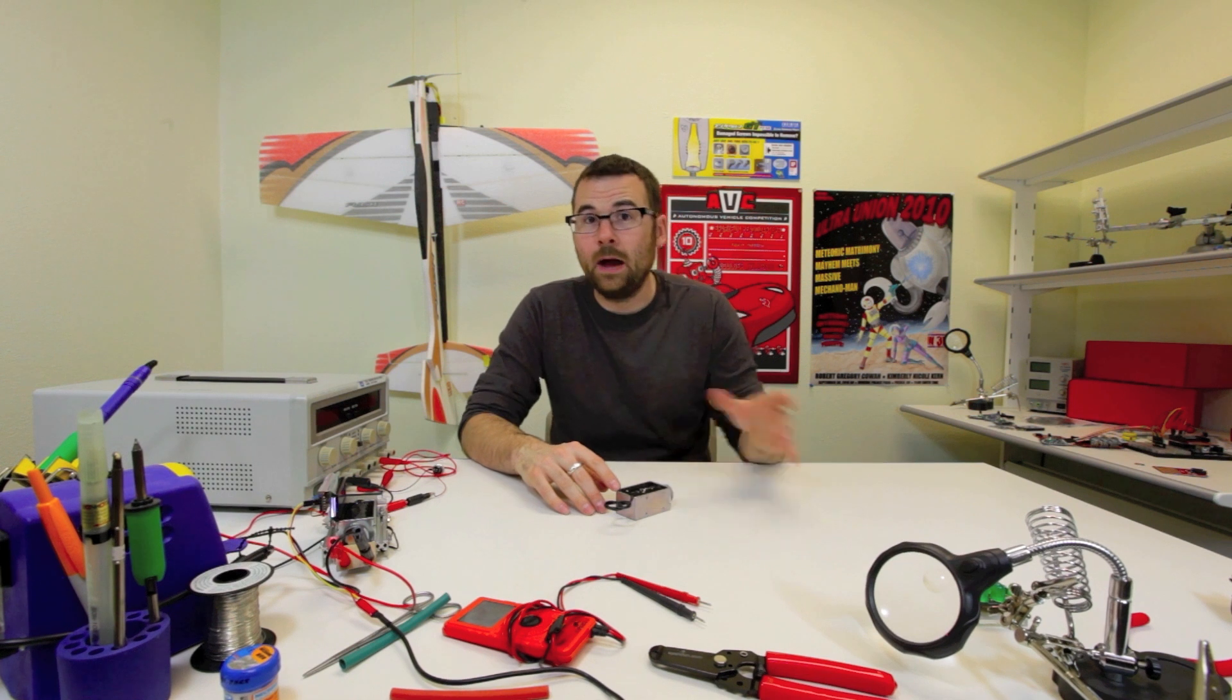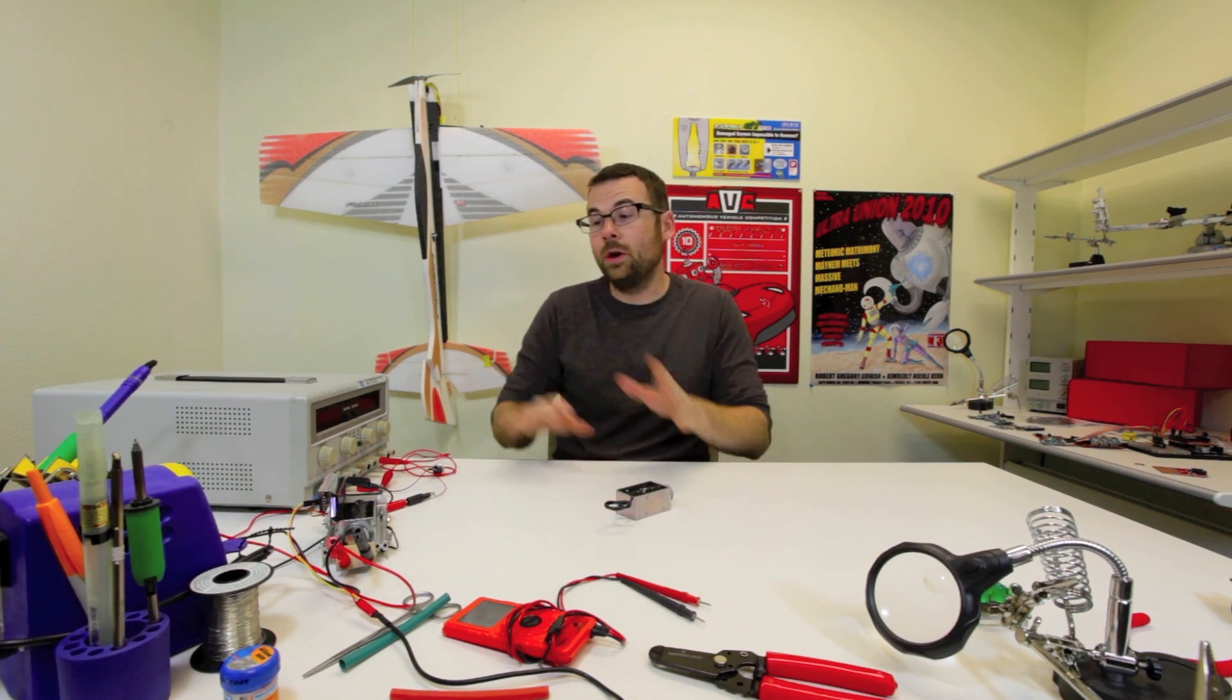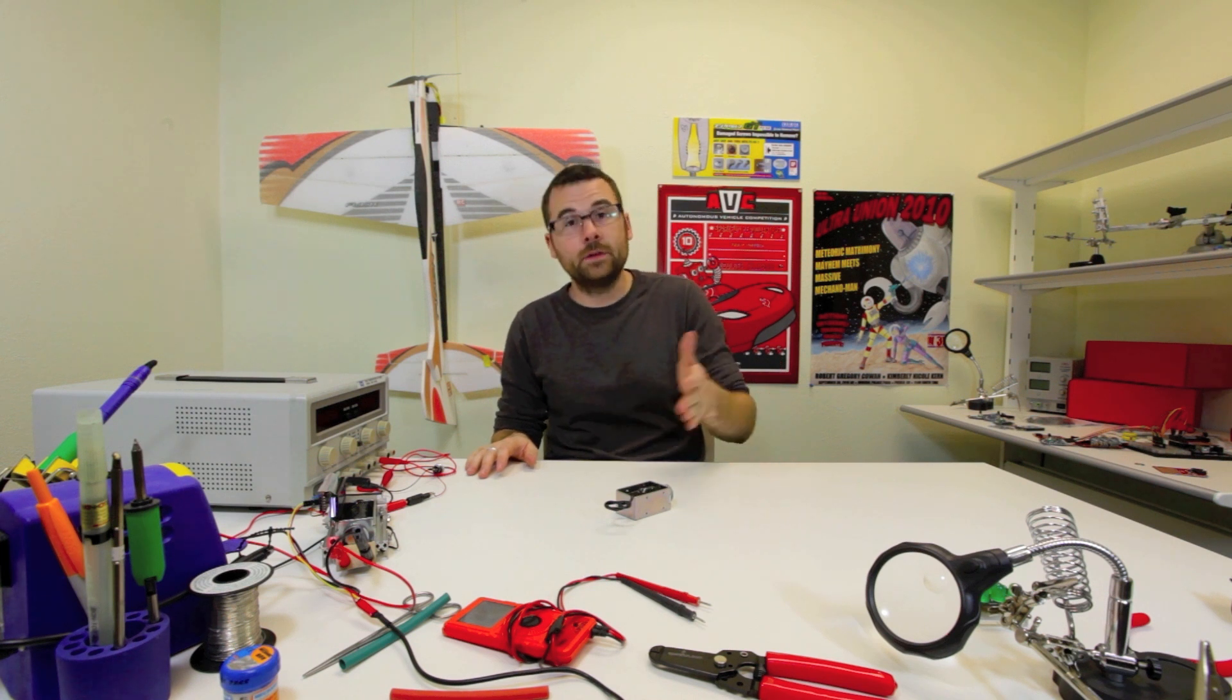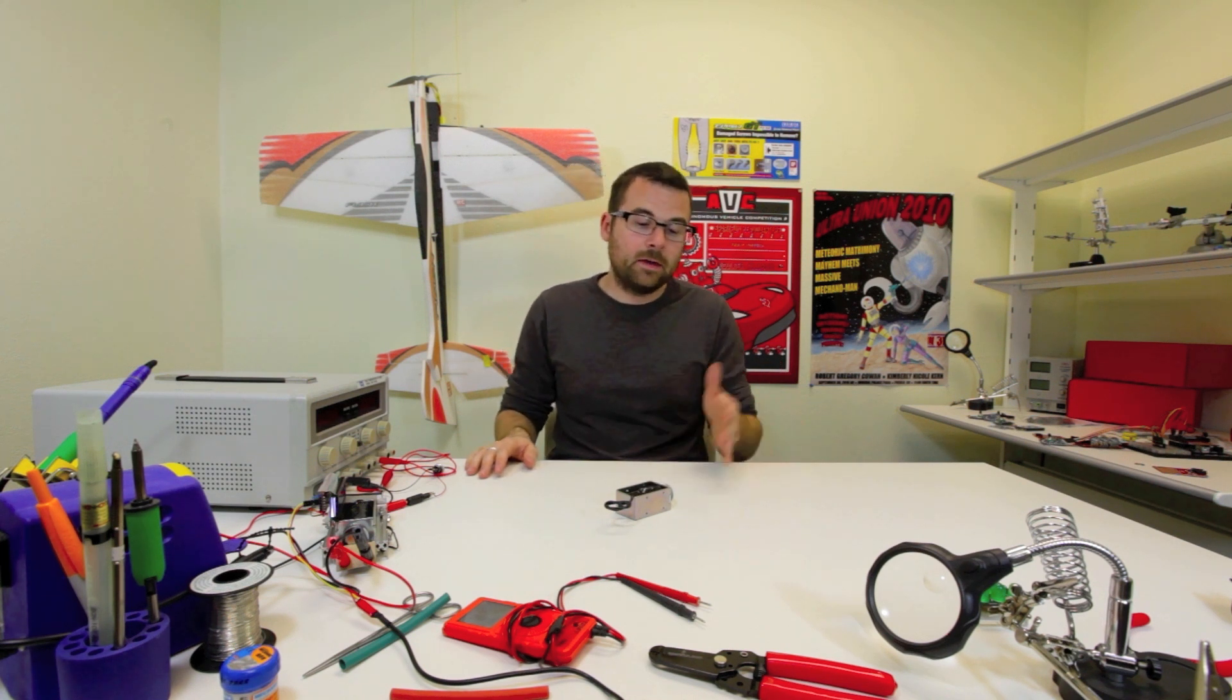This particular solenoid operates at 36 volts, although, as we're going to show from a demo, you can easily operate anywhere from 5 to 36 volts. The amount of force will just vary depending on how much voltage you give it.